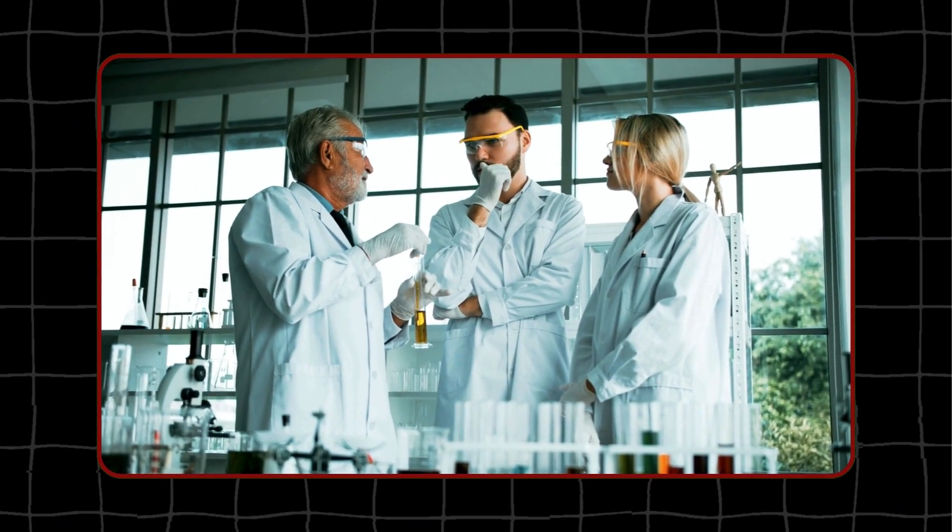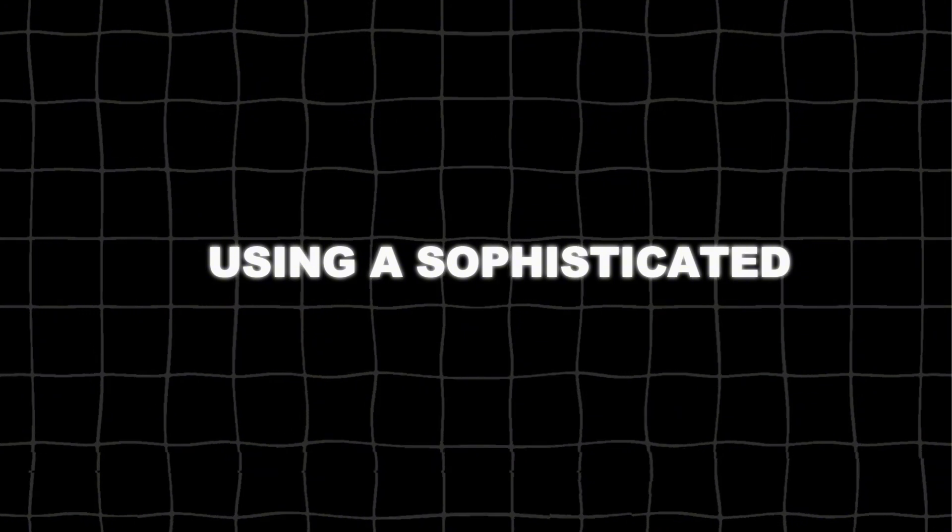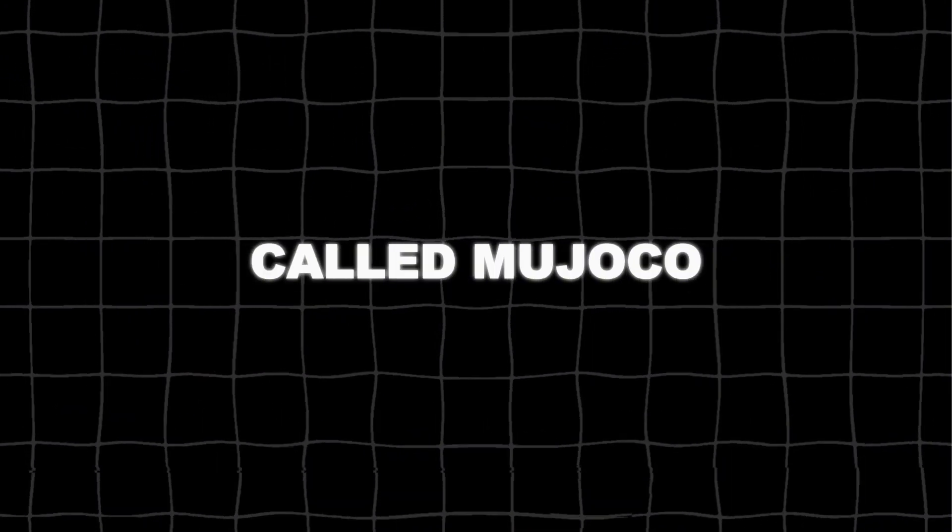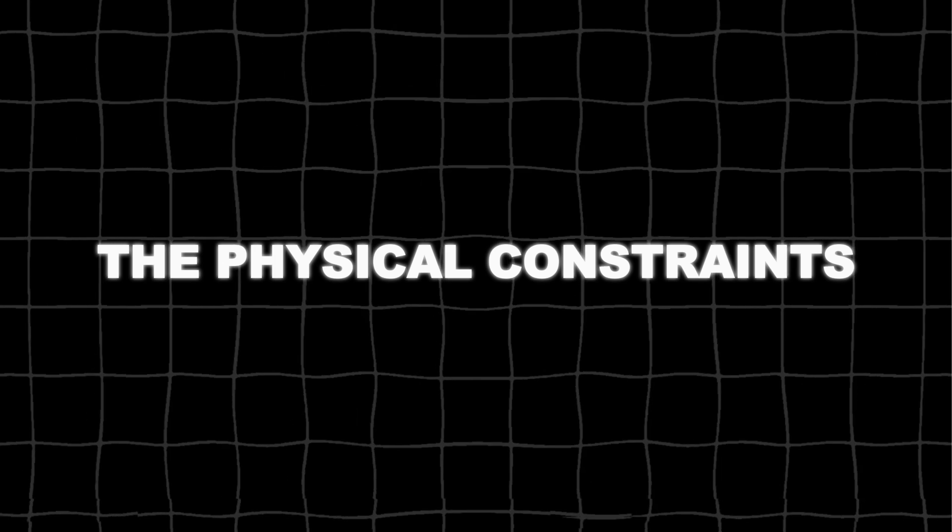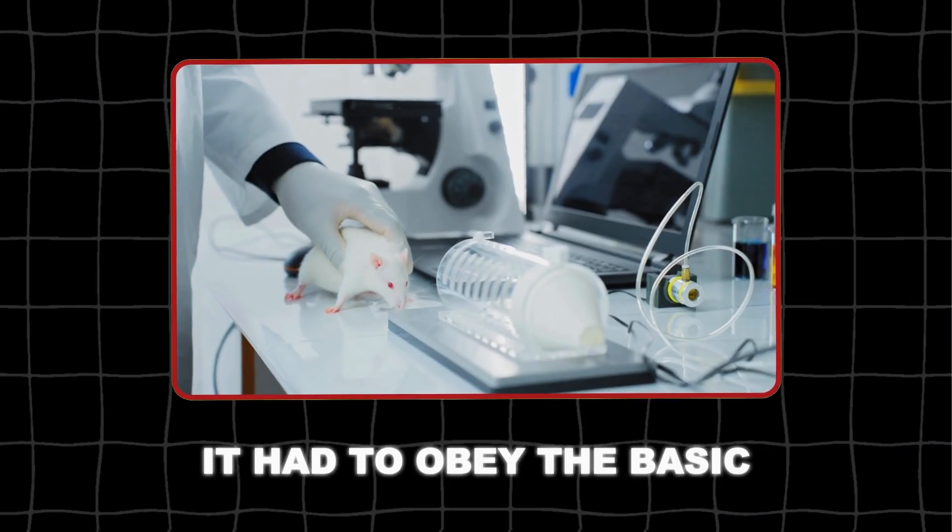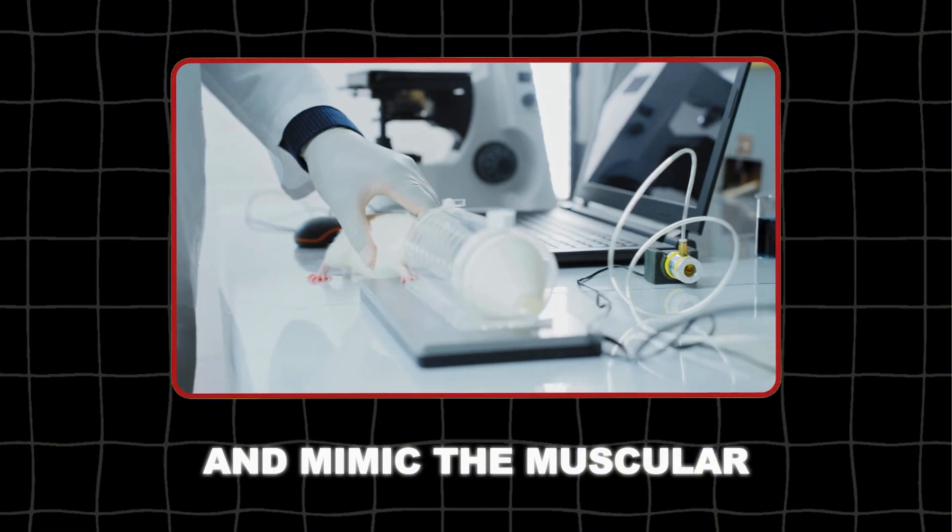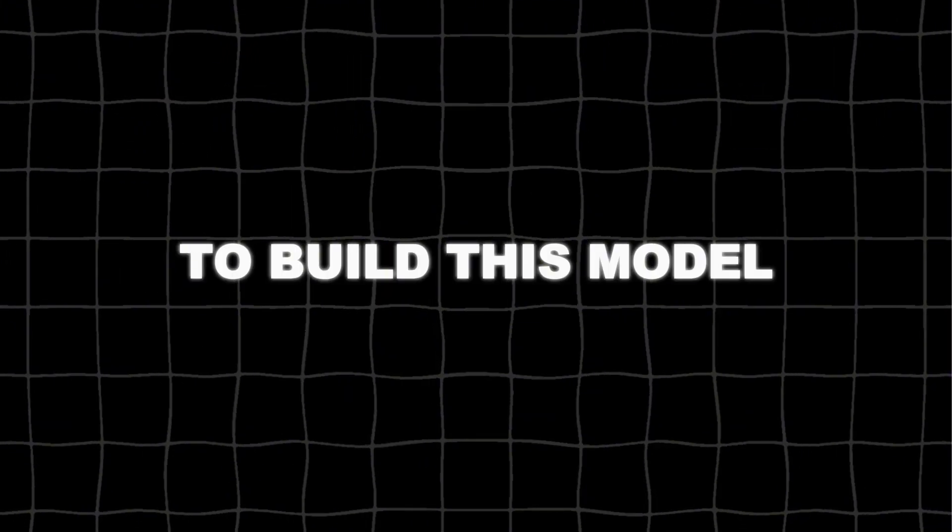They began by creating an accurate biomechanical model of a rat's body using a sophisticated physics simulator called MUJOKO. This virtual rat was designed to mimic the physical constraints and mechanics of a real rodent. It had to obey the basic laws of physics and mimic the musculoskeletal movements of an actual rat's body.